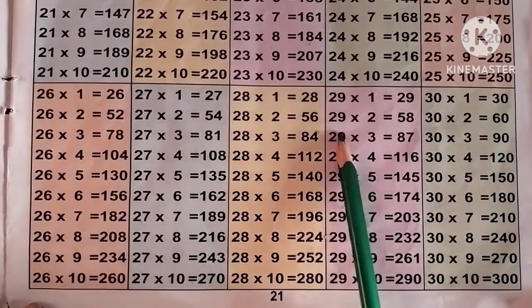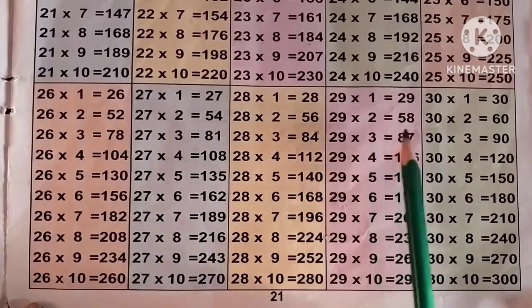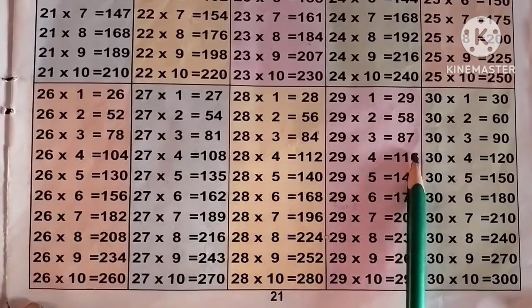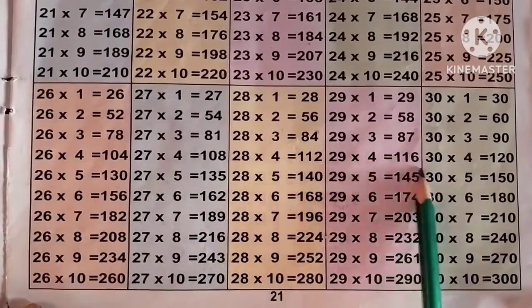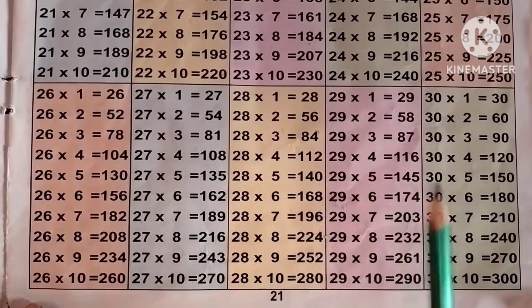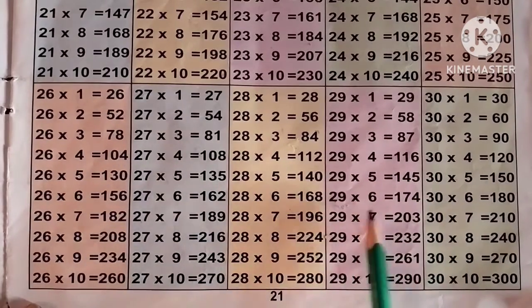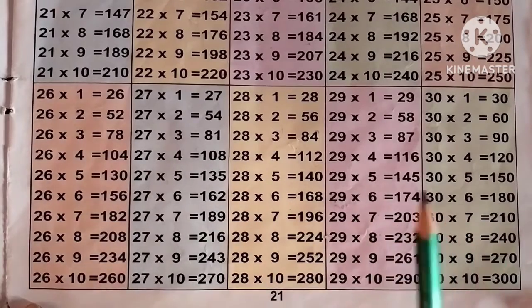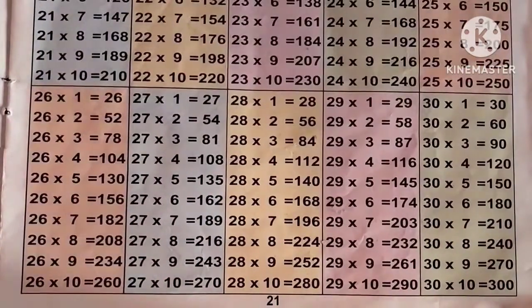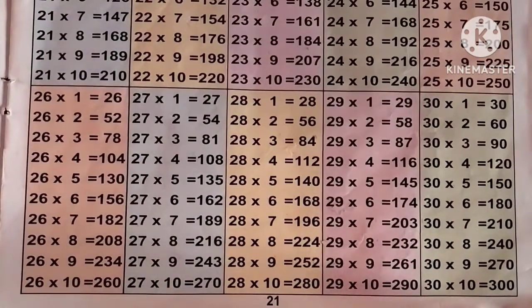Now the table of 29: 29 ones are 29, 29 2s are 58, 29 3s are 87, 29 4s are 116, 29 5s are 145, 29 6s are 174, 29 7s are 203, 29 8s are 232, 29 9s are 261, 29 10s are 290.